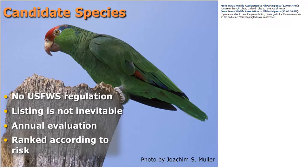Candidate species are not regulated by Fish and Wildlife Service as listed candidates, and it doesn't mean that listing is inevitable — the dunes sagebrush lizard didn't get listed, for example. An annual evaluation is posted in the Candidate Notice of Review each year, ranking candidate species according to risk. Identification of candidate species and threats provides an opportunity for conservation planning — giving landowners and resource managers a chance to alleviate threats and possibly conserve the species so that listing becomes unnecessary.